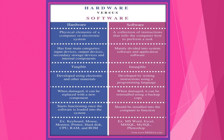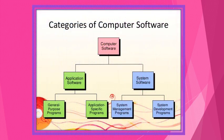Software can be damaged and can be reinstalled using a backup copy. It should be installed into a computer for better function. Examples: MS Word, Excel, MS SQL, MySQL, Photoshop, and many different software. Now you can see the categories of computer software — it is divided into two parts: Application software, used for general purpose and application-specific programs, and System software, used for system management programs and system development programs.